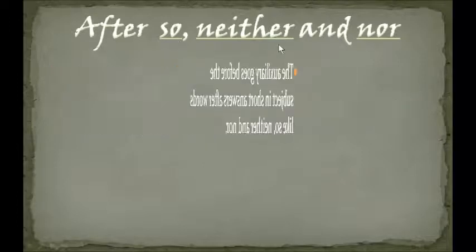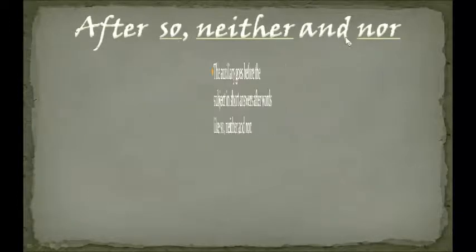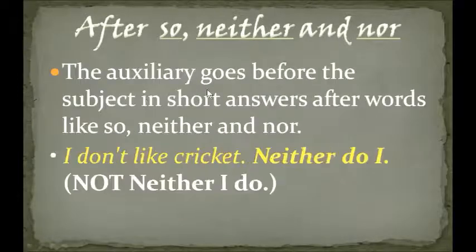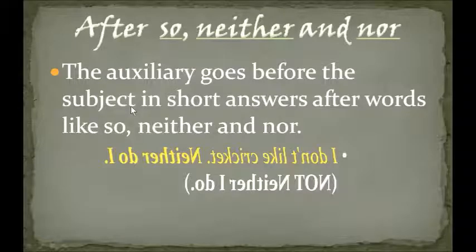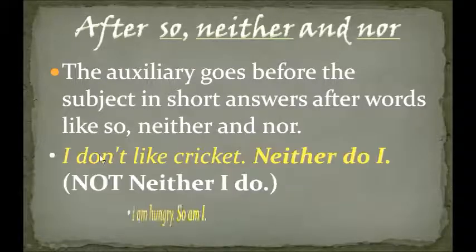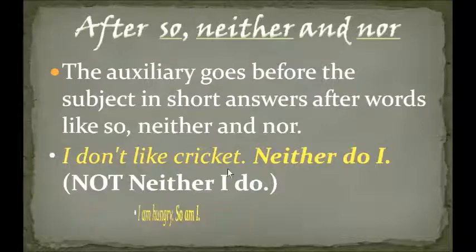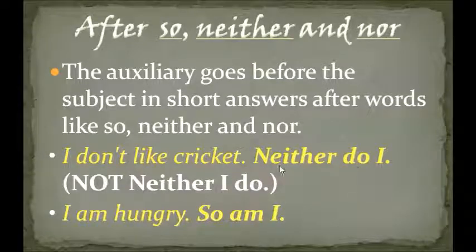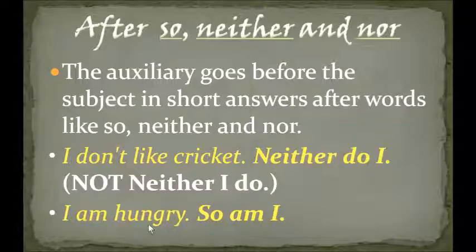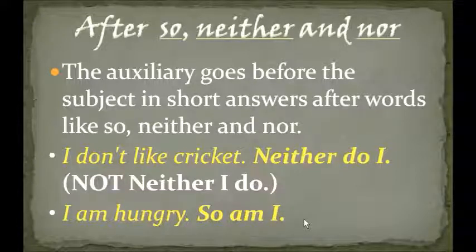For 'so,' 'neither,' and 'nor,' the auxiliary goes before the subject in short answers. For example: 'I don't like cricket.' — 'Neither do I.' You can't say 'neither I do.' Another: 'I'm hungry.' — 'So am I.' You can't say 'so I am.' These are very important and you must remember them well to avoid mistakes.